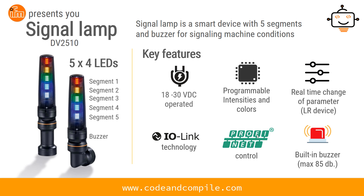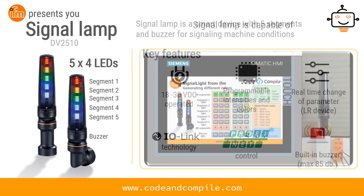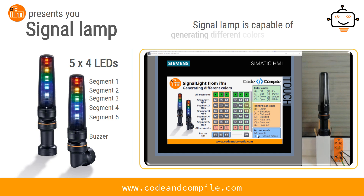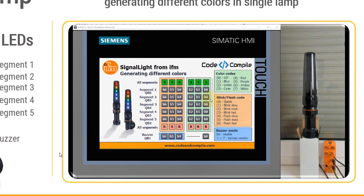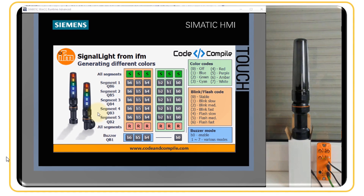With the IFM signal lamp, you don't need multiple devices — one device has all these features. Now let's see some examples. The first example shows how the signal lamp is capable of generating different colors.